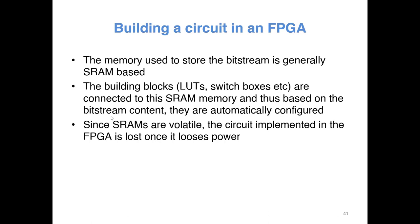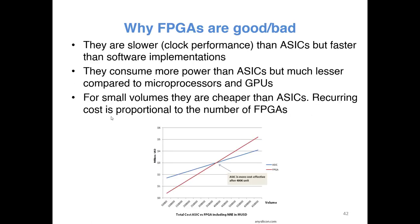Modern FPGAs store the content of LUTs, switch boxes, and MUXes in SRAM-based memory inside the chip. SRAM, as we have seen in the computer architecture course, is volatile in nature. That means once you remove the power, the SRAM loses its content. So when you power down the FPGA, the circuit implemented inside it is lost, and the next time you power up, you have to reprogram it.